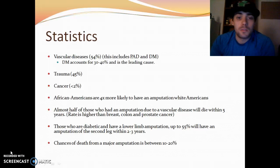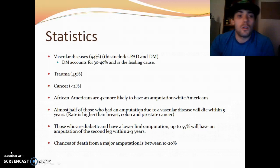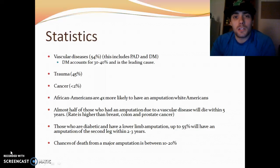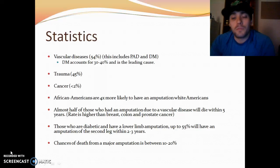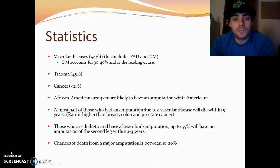54% of amputations are due to vascular diseases, including both peripheral artery disease and diabetes mellitus. Diabetes mellitus by itself accounts for 30 to 40% and is the leading cause. Trauma accounts for 45% and cancers about 2% or less. African Americans are four times more likely to have an amputation than white Americans. Almost half of those who had an amputation due to vascular diseases will die within five years — a rate higher than breast, colon, and prostate cancer. Those who are diabetic and have a lower limb amputation, up to 55% will have an amputation of the second leg within two to three years, and chances of death from a major amputation are between 10 to 20%.